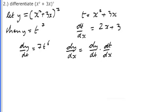So now it's just the case of substituting in for dy/dt and dt/dx. dy/dt is equal to 7t^6, and that is multiplied by dt/dx, which is 2x + 3.